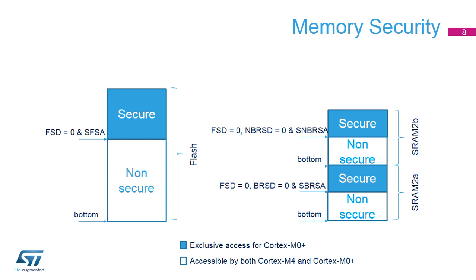The top of the memories can be secured for exclusive Cortex-M0 Plus access. The top of the flash memory, starting from the Secure Flash Start Address, is secure when the Flash Security Disable bit, or FSD, is set to zero. The top of the Backup SRAM2A, starting from the Secure Backup RAM Start Address, or SBRSA, is secure when both the Flash Security Disable and Backup RAM Security Disable, or BBRSD, bits are set to zero. The top of the Non-Backup SRAM2B, starting from the Secure Non-Backup RAM Start Address, or SNBRSA, is secure when both the Flash Security Disable and Non-Backup RAM Security Disable, or NBRSD, bits are set to zero. It is possible to only secure the Flash memory without any RAM security.